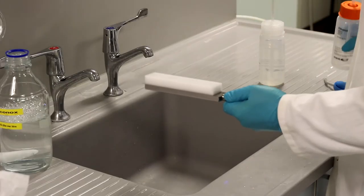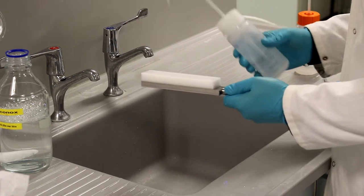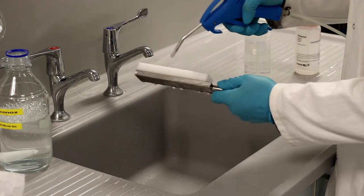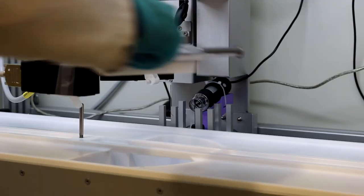Replace the trough and then perform the same washing process with each of the barriers. Place them directly onto the clean trough once finished.